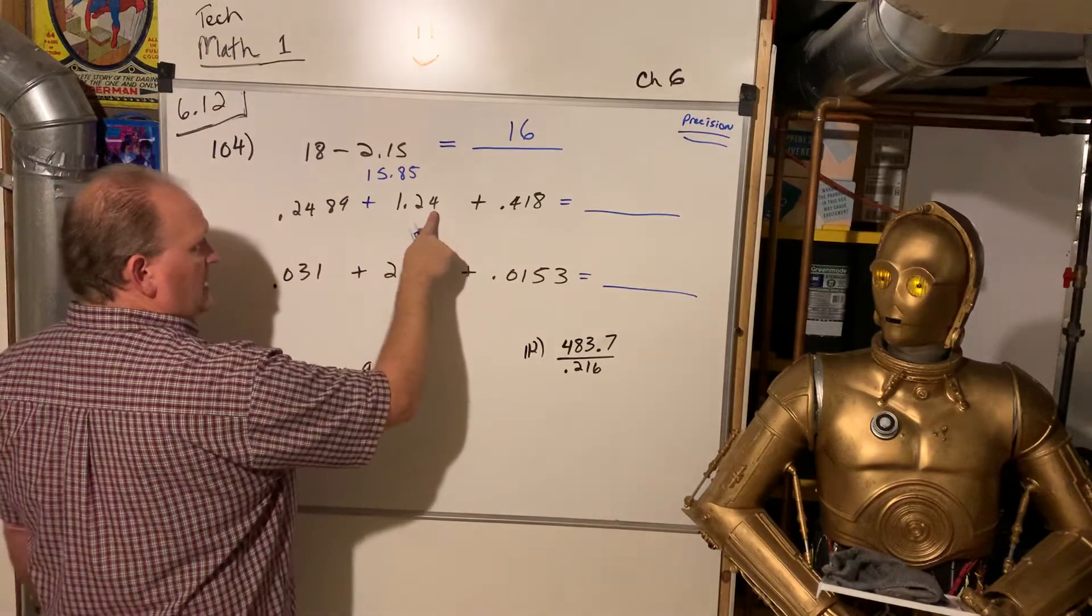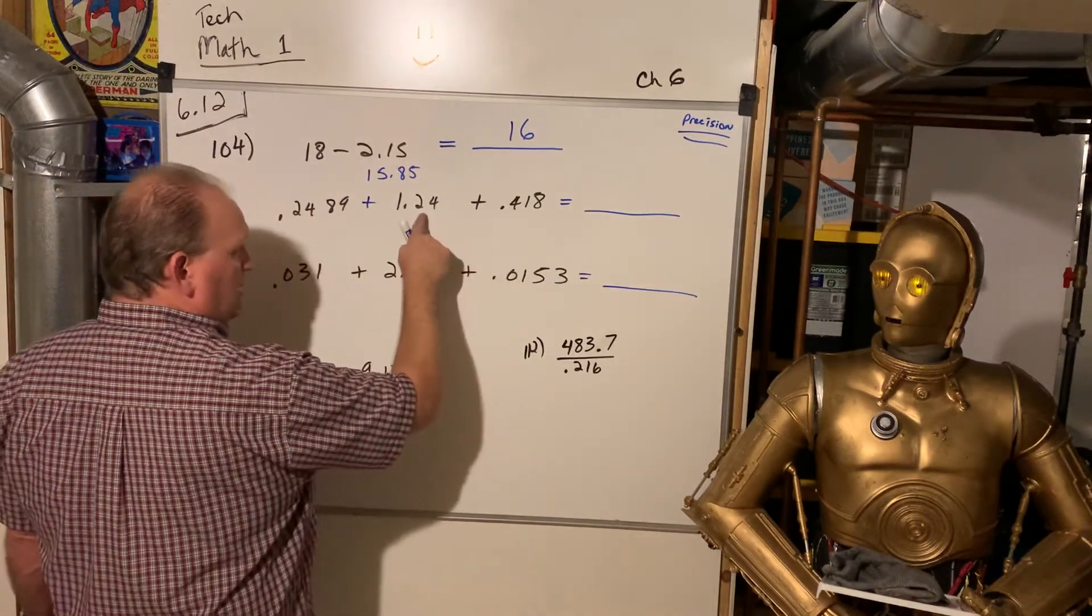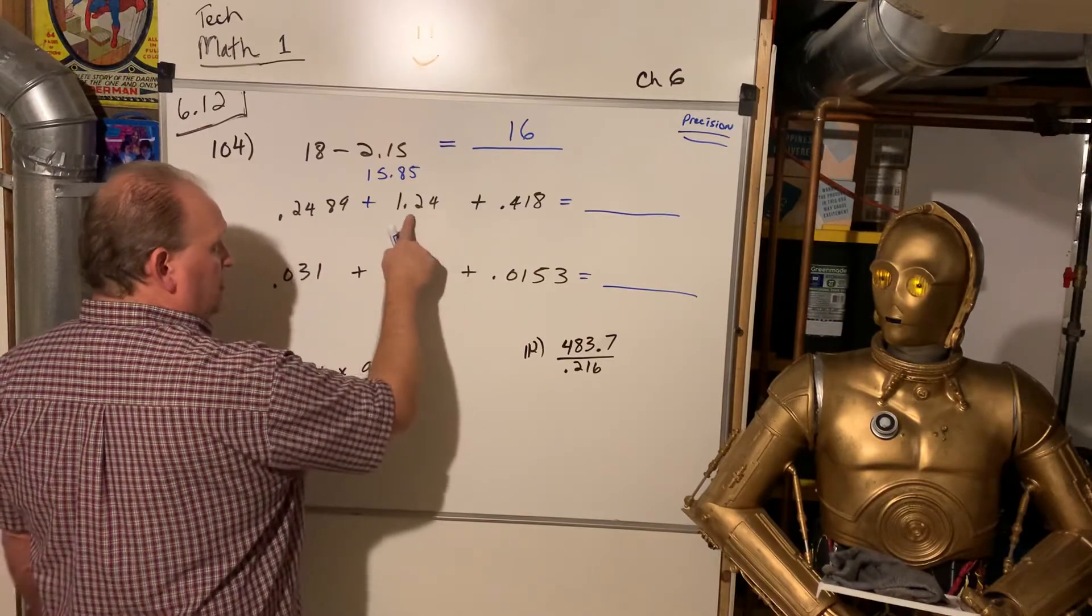1000th, 10th, 1000th place, 100th place, and 1000th place. So we're going to add it up, but then we're going to round to 100th, okay?